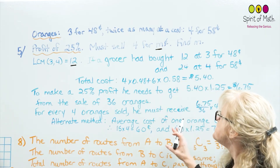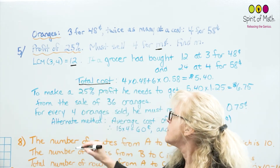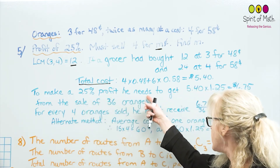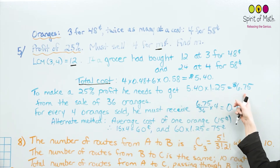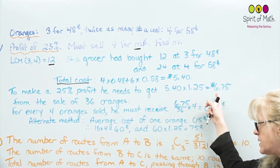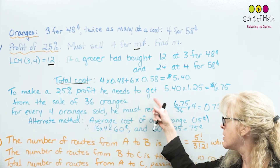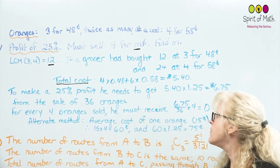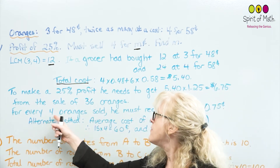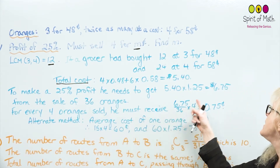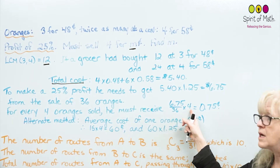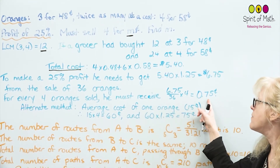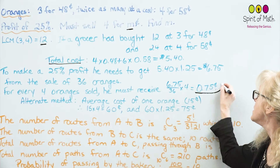To make a 25% profit, he needs 540 cents × 1.25 = $6.75, from the sale of 36 oranges. So for every 4 oranges sold he must receive $6.75 ÷ 36 × 4, which equals 75 cents. So M = 75.